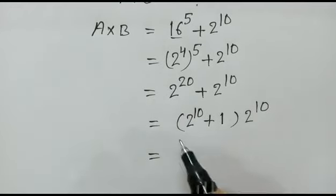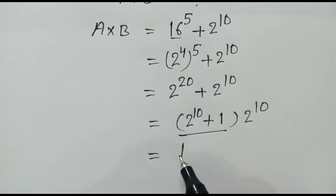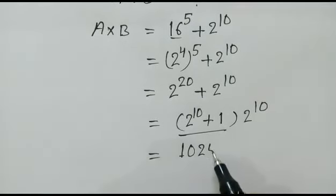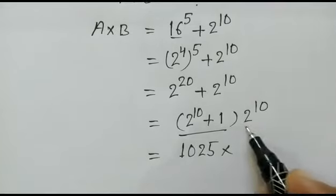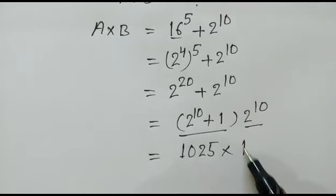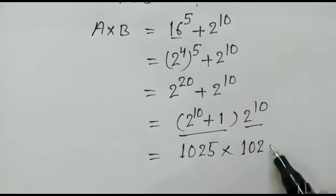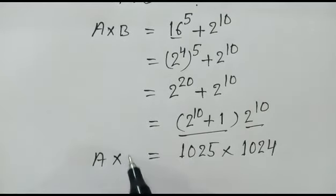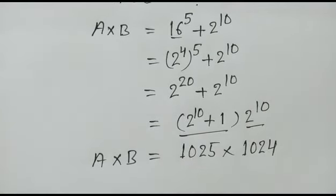Now this value will be 1025 into 1024. So A into B is equal to this.